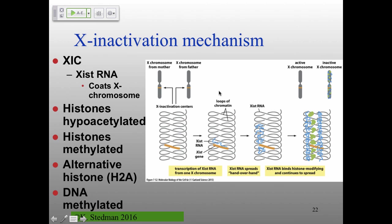Once this compaction process takes place, through histone methylation and histone binding proteins that methylate adjacent histones, it gets passed along from generation to generation. Curiously, the X inactivation center itself is not compacted. Any chromosome still being activated — that's what gets passed along. X inactivation involves a long non-coding RNA and all of the histone and DNA modifications we've talked about.